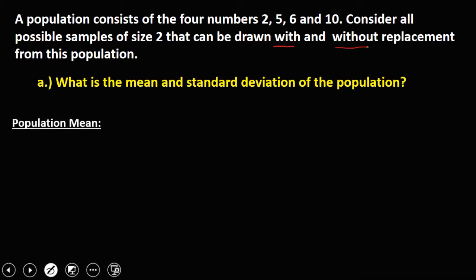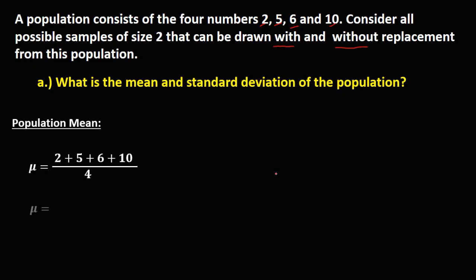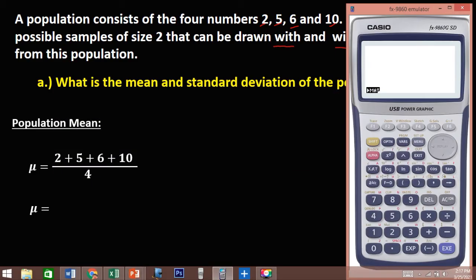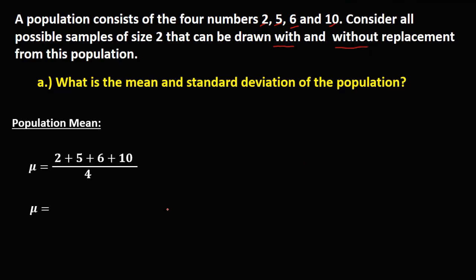To solve for the population mean, just add all the numbers in the population. We have 2 plus 5 plus 6 plus 10, divided by the population size. Since we have 4 numbers, divide by 4. So, 2 plus 5 plus 6 plus 10 divided by 4 equals 5.75. This is the population mean.